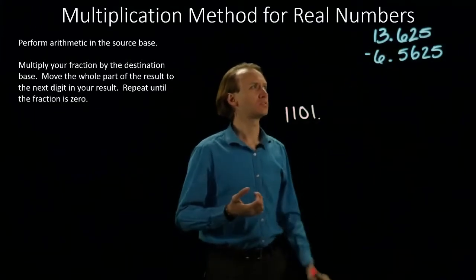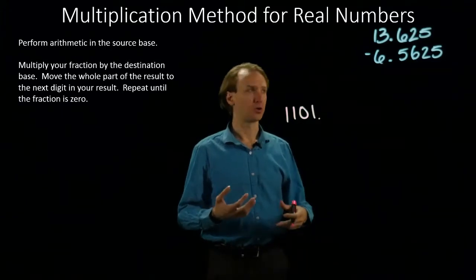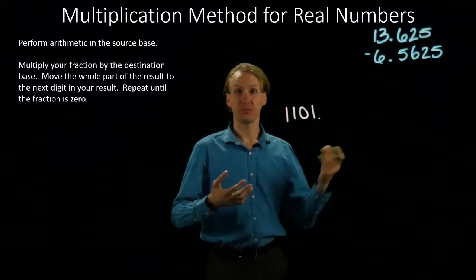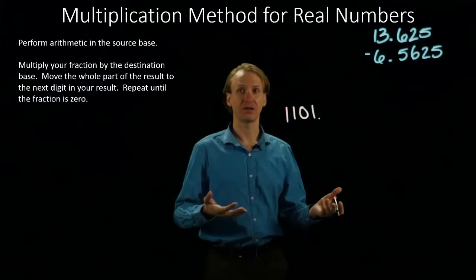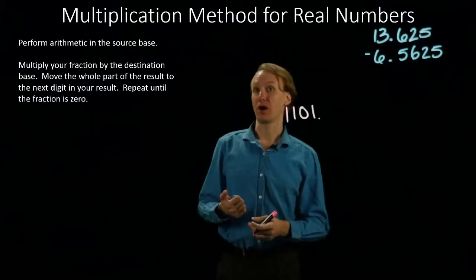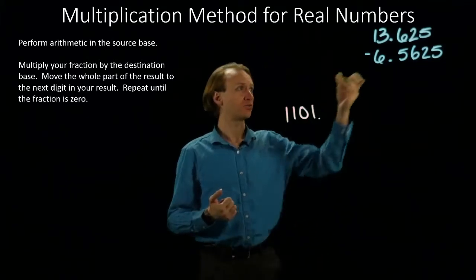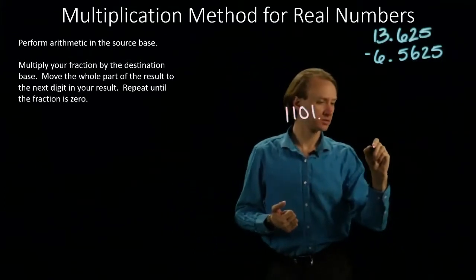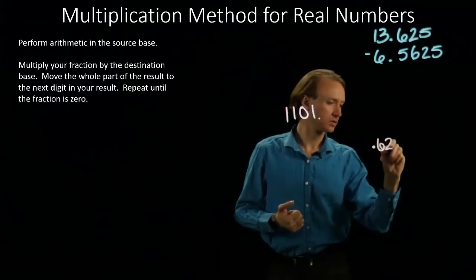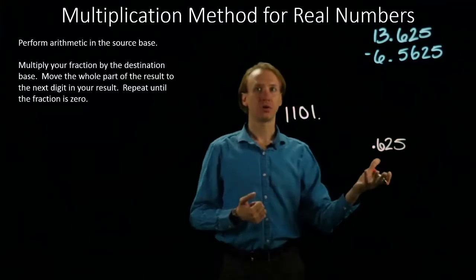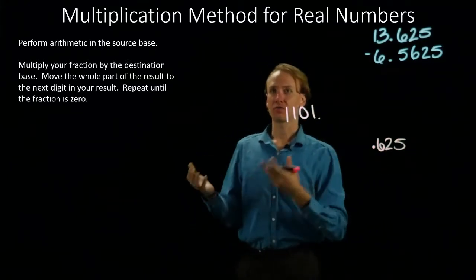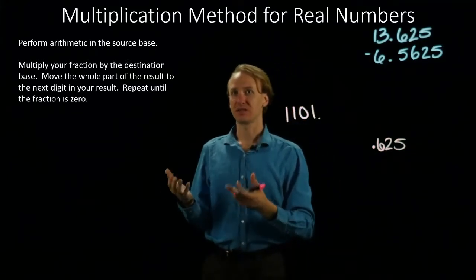But now I have the 0.625. If you're used to looking at some of these fractions, you might be able to see what that is automatically. But otherwise, we'll want to work through our algorithm. My fraction here is 0.625. So, I'll write this down.